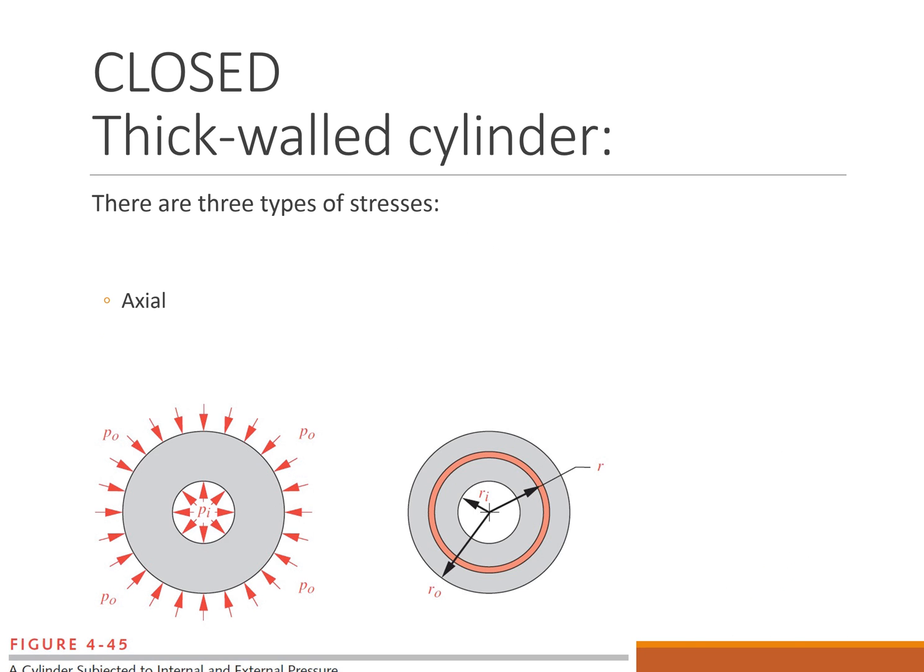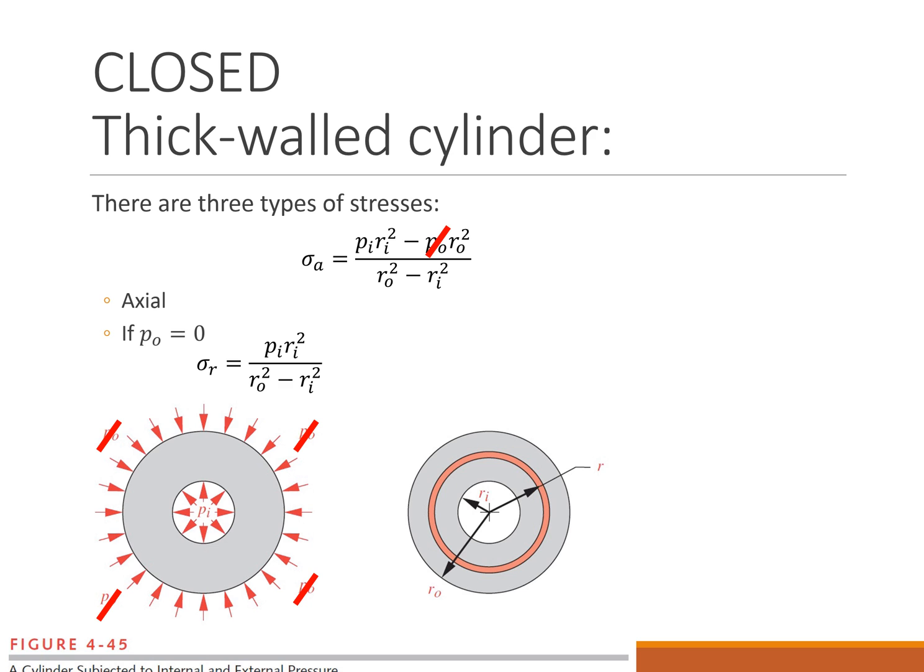If the cylinder is closed, then there is an axial stress that's not equal to zero. If the cylinder is open, then the axial stress is equal to zero. But for closed thick-walled cylinders, the equation is just the constant term. It turns out for any radius, the axial stress is the same. Again, if the outside pressure is equal to zero, the equation simplifies quite a bit more.